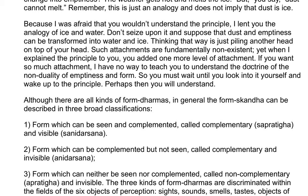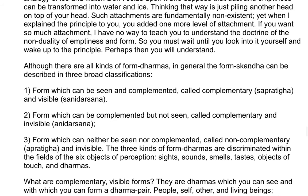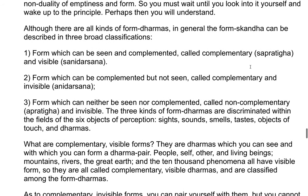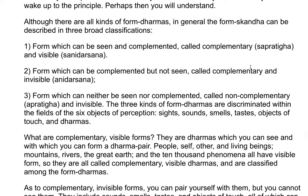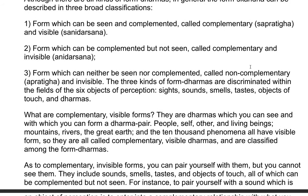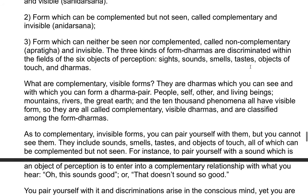Although there are all kinds of form dharmas, in general, the form skanda can be described in three broad classifications. First, form which can be seen and complemented, called complementary visible. Second, form which can be complemented but not seen, called complementary and invisible. Third, form which can neither be seen nor complemented, called non-complementary, invisible.